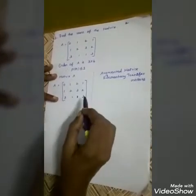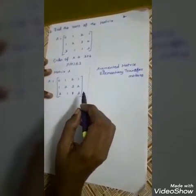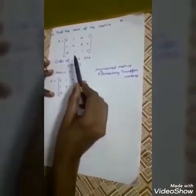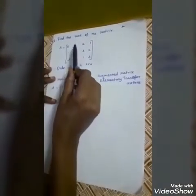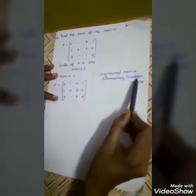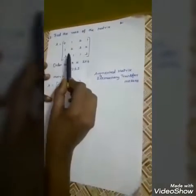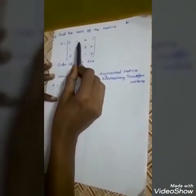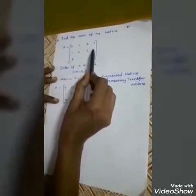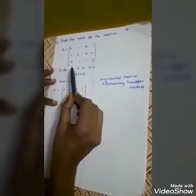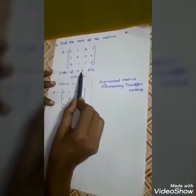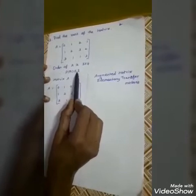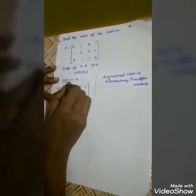Okay students, now you understand how to find the rank of the matrix using elementary transformations. Shall we do one more example? Find the rank of the matrix A equals [0, 1, 2, 1; 1, 2, 3, 2; 3, 1, 1, 3]. This is a 3x4 matrix. Order of A is 3x4. Therefore, rank of A is less than or equal to 3.